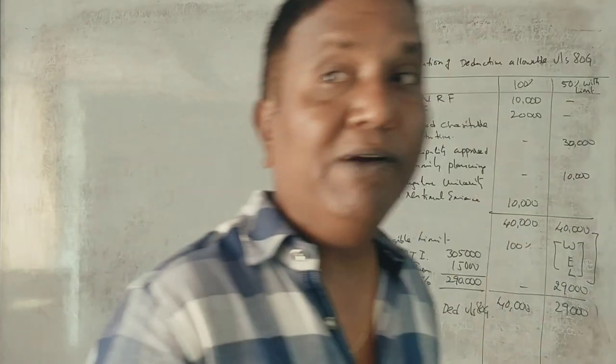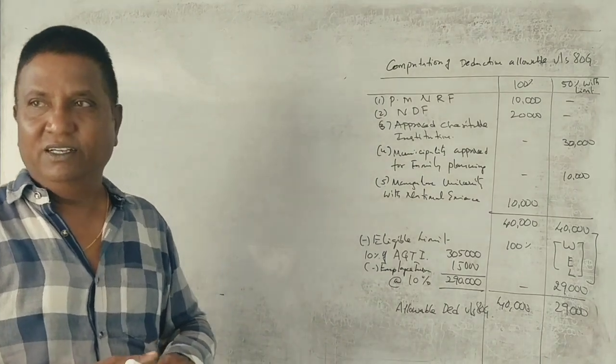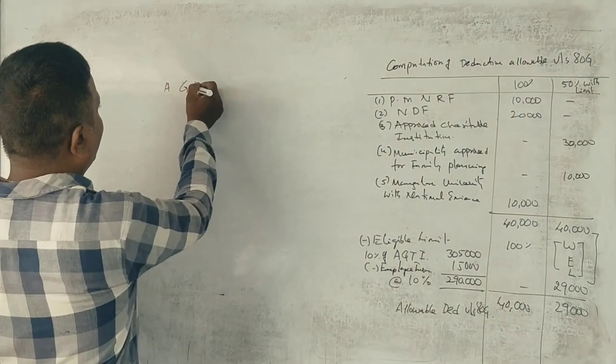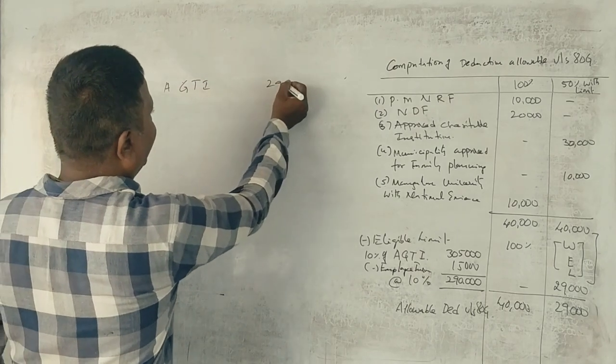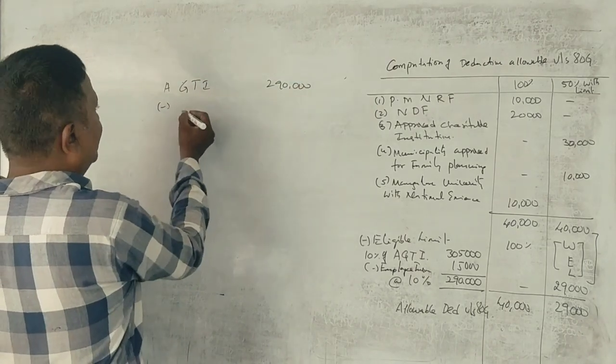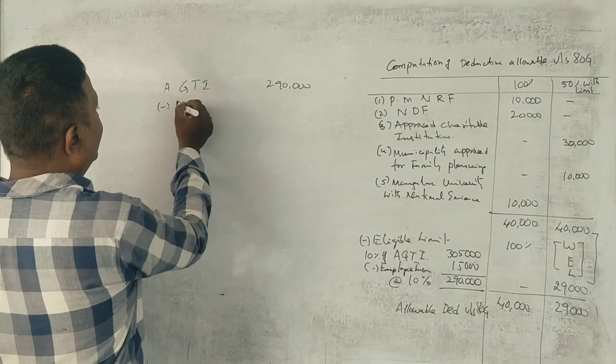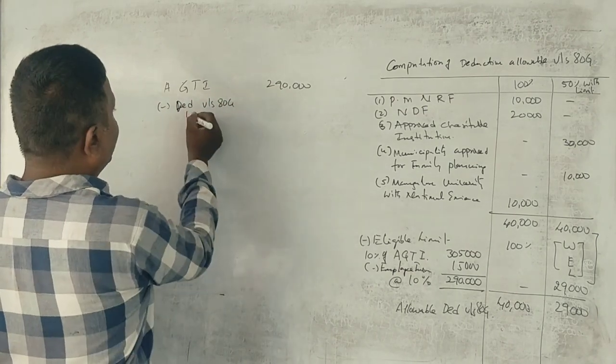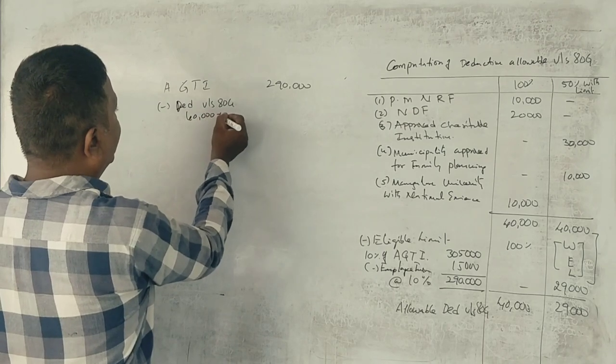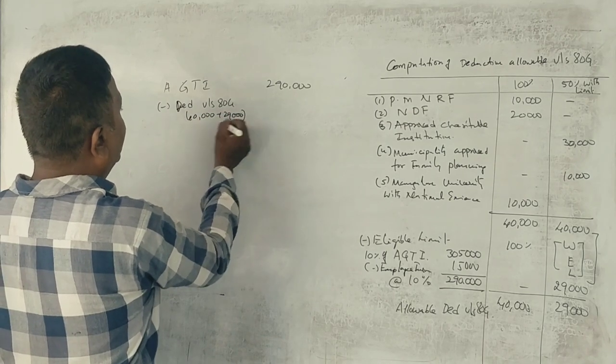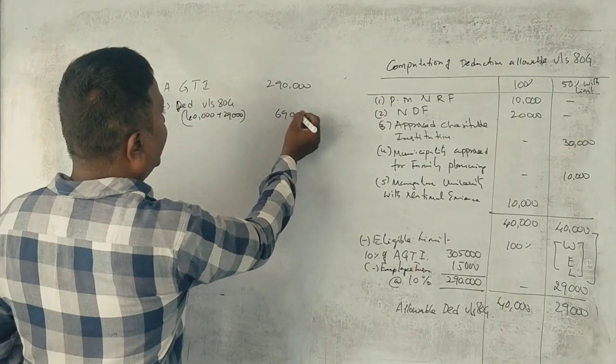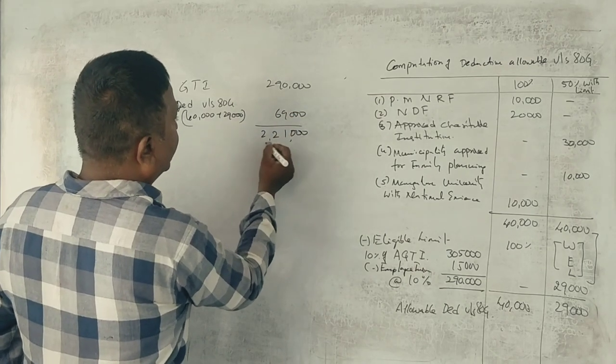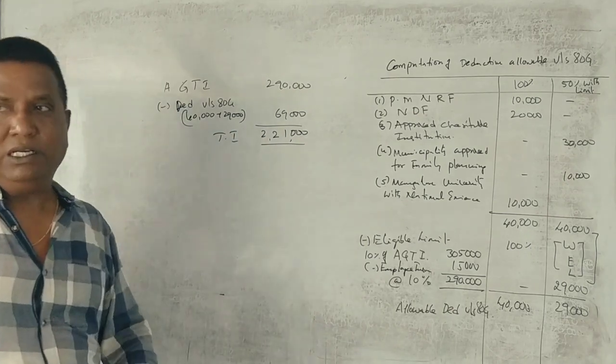Suppose, adjusted gross total income of 2,90,000, correct? Minus deduction under section 80G, total 40 plus 29. So, 2,90,000 minus... total income. Total income, taxable income, okay?